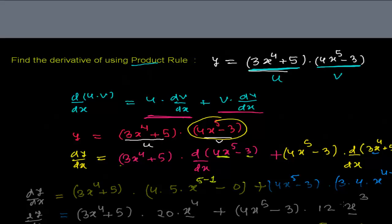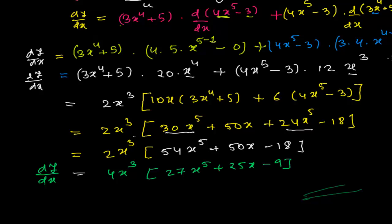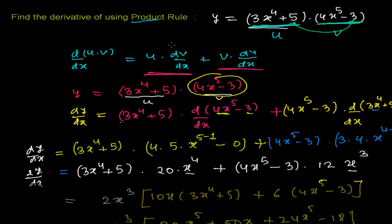And here we are done — we found the derivative using the product rule. As I mentioned, you can also find it using other methods: for example, you could first multiply out (3x to the power 4 plus 5)(4x to the power 5 minus 3) and then apply the simple power rule directly. Either way, you'll arrive at the same answer. But since the question asks to use the product rule, that's what we did here. I hope you're getting a clearer concept of using the product rule.